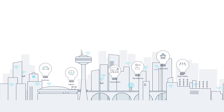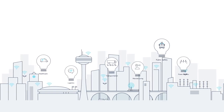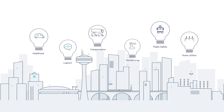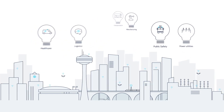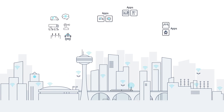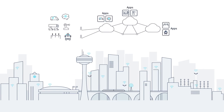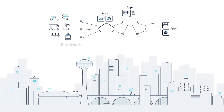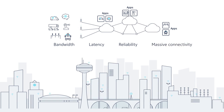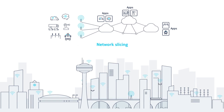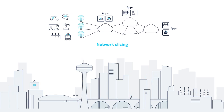5G gives enterprises the opportunity to develop new ways to bring unique products and services to market with greater efficiency. To achieve this vision, communications service providers, or CSPs, need to create and deploy services that satisfy a wide range of application requirements, all on a shared network infrastructure. Network slicing can answer this call, enabling greater flexibility to adapt to these demands.